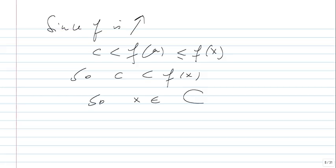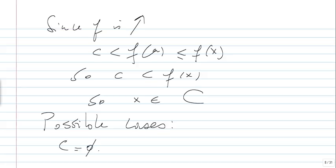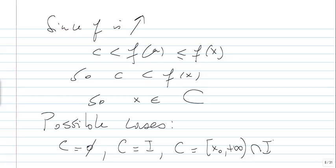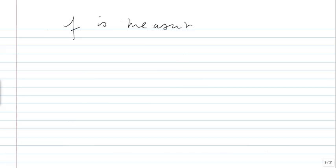So, all possible cases are: C = ∅, C = I, C = [x₀, +∞) ∩ I, or C = (x₀, +∞) ∩ I. Since I is an interval and is measurable, and [x₀, +∞) and (x₀, +∞) are measurable, and the empty set is measurable, all possible cases yield a measurable set. Therefore, C is measurable for any c, and we conclude that f is measurable.